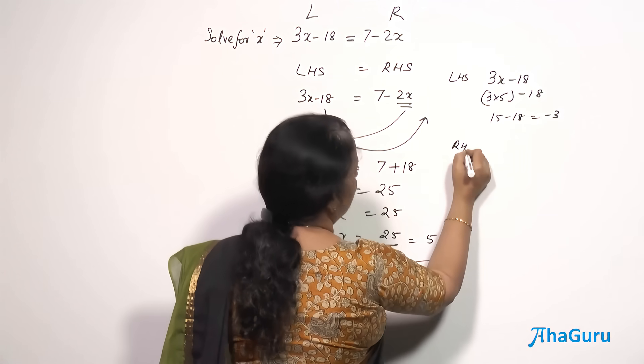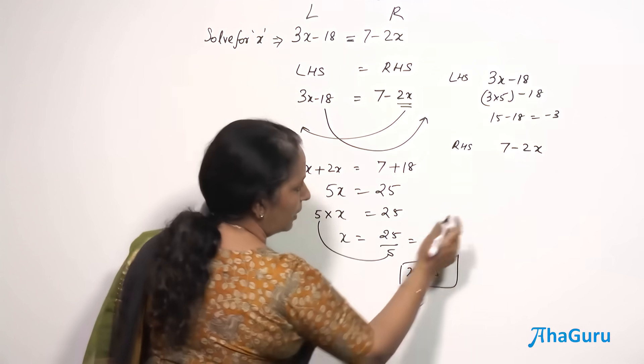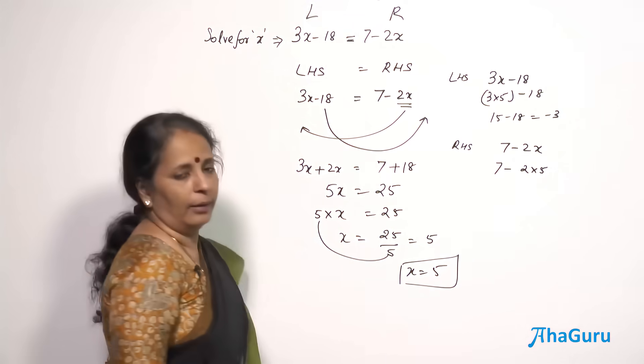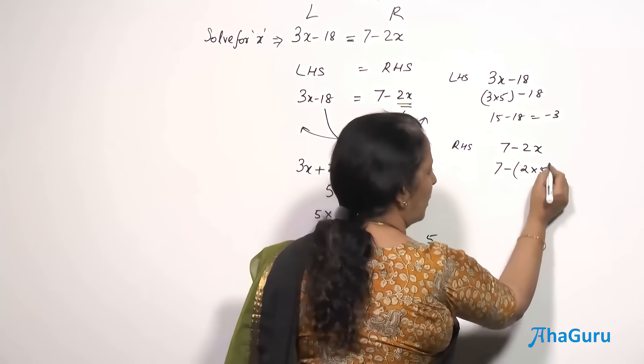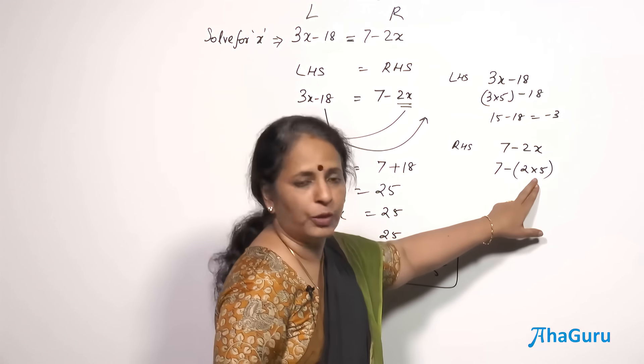Now on the RHS, what do we have? 7 minus 2x but the x is 5, isn't it? So 7 minus 2 into 5. Remember the BODMAS rule? Put a bracket also. That way we will be all the more sure that this is what you have to do first.